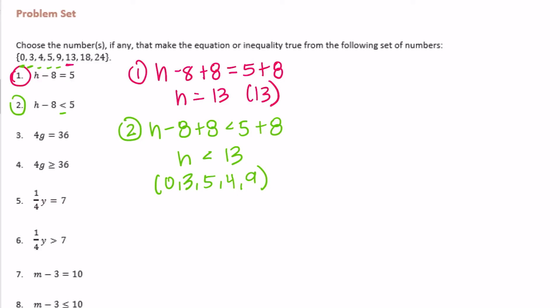Number 3: 4g. To get g alone we're going to divide by 4, equals 36 divided by 4. So g would equal 36 divided by 4, so g equals exactly 9. We do have a 9, so the only thing that makes this true is 9.